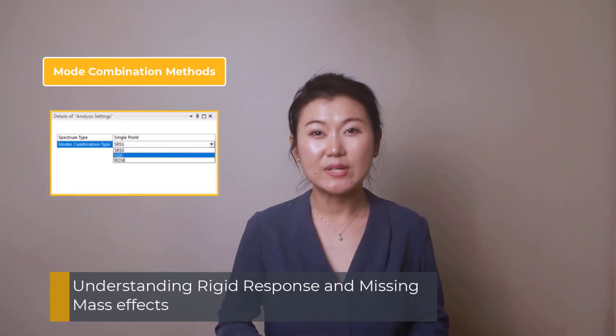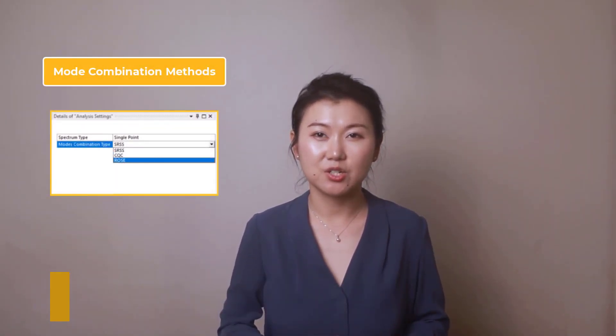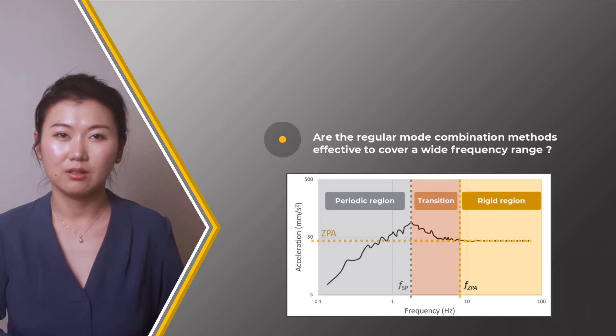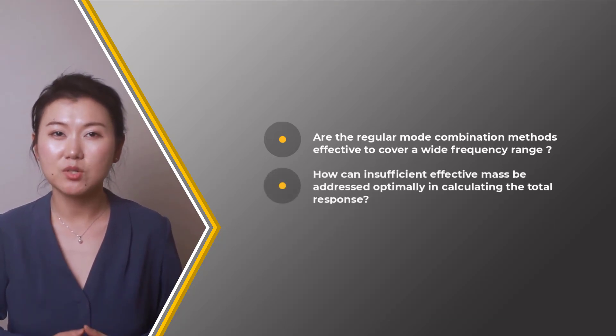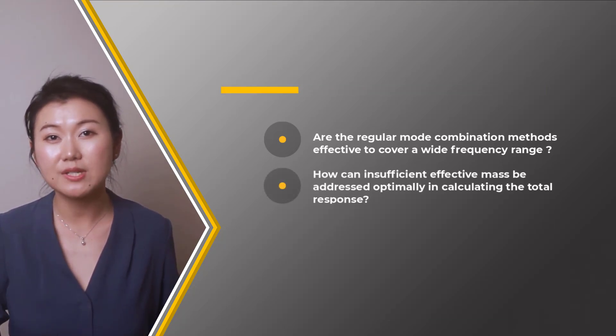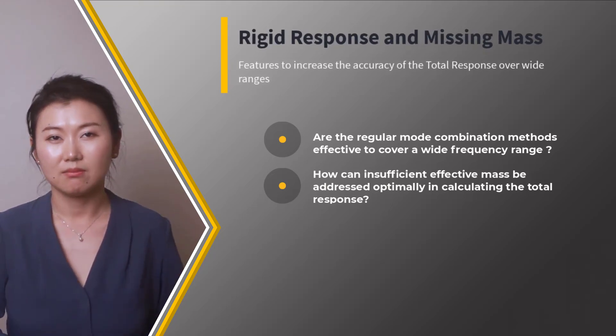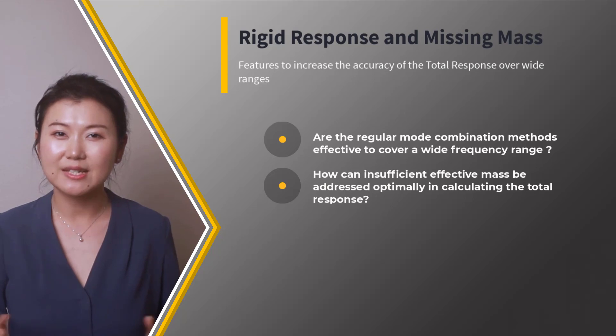Hello everyone! In response spectrum analysis, we select a mode combination method to estimate the peak response of our structure. However, are these mode combination methods applicable for a wide frequency range? Also, what if the number of modes we have is sufficient to cover the frequency range but does not have sufficient effective mass? In this video, we'll answer these questions and investigate techniques to obtain more accurate response spectrum results. Ready? Let's get started!